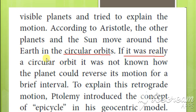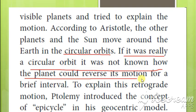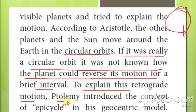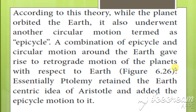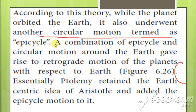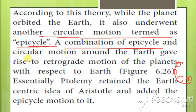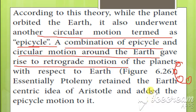If the planets really moved in a circular orbit, it was not known how a planet could reverse its motion. To explain this retrograde motion, Ptolemy introduced a concept called the epicycle in his geocentric model. According to this theory, while the planet orbited the earth, it also underwent another circular motion termed the epicycle. A combination of the epicycle and the circular motion around the earth gave the retrograde motion.